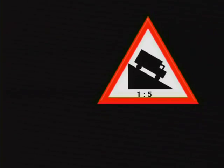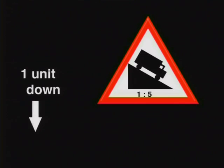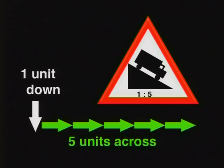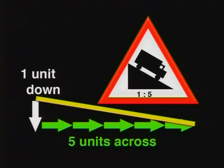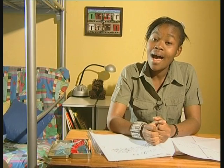That sign tells us how steep the road is. Really? Then how steep is it? Let's have a look. The sign gave a ratio of one to five. It means that for every one meter we go down, we go five meters across. I just hope that truck had good brakes.